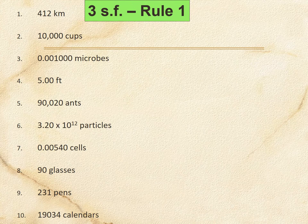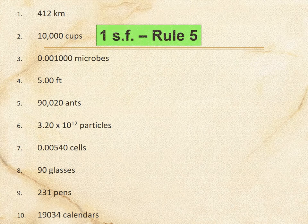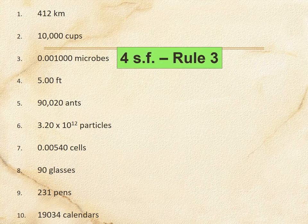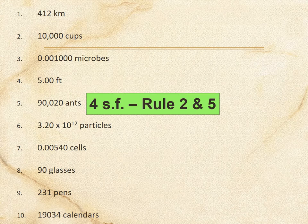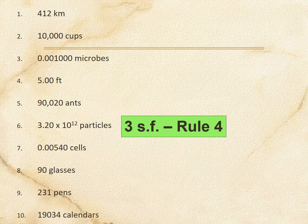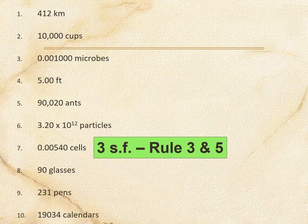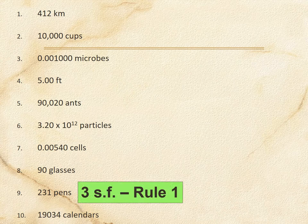412 is three sig figs. 10,000 is one. 1.001000 microbes — if you said four, you are right. Wait — actually that should be seven. 5.00 is three. 90,020 ants: there's no decimal, so 9, 0, 0, 2 are significant but the trailing zero is not — that's four sig figs. 3.20 is three. And for 0.00540, if you said three, you are right. 90 glasses is one, 231 is three, and 19,034 calendars is five.